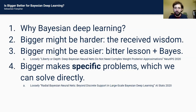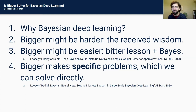Then I'm going to lay down the received wisdom — why bigger neural networks might make approximate inference harder. Then I'll talk about one way in which it might actually make approximate inference easier, combining Sutton's bitter lesson idea with Bayesian deep learning concepts, based on one of my recent papers from NeurIPS. Finally, I have a proposal for one thing that's making it so hard and how to resolve it.